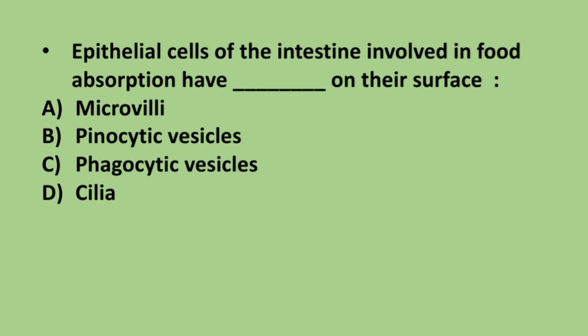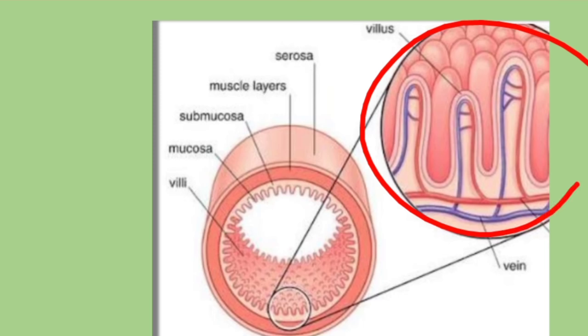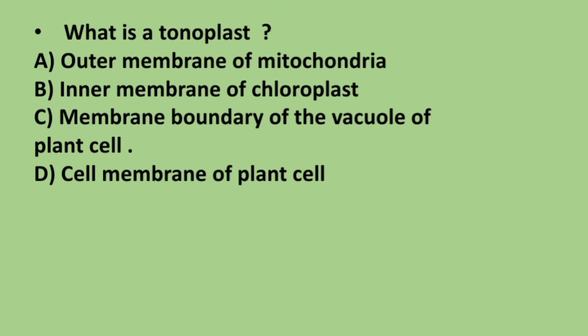Next question: epithelial cells of the intestine involved in food absorption have what on their surface? Options are microvilli, pinocytic vesicles, phagocytic vesicles, or cilia. The correct answer is option A, microvilli. These are the villi present in the small intestine for absorption.